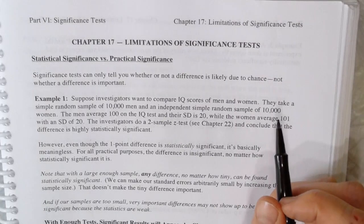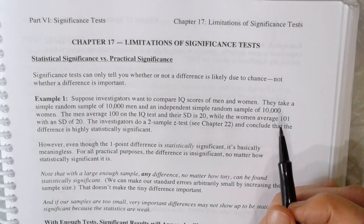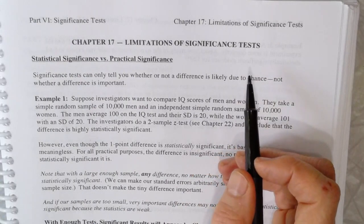We went over chapter 17 and 18 pretty quickly in class, so I said I'd go over them in more detail. Chapter 17 is about the limitations of significance tests.